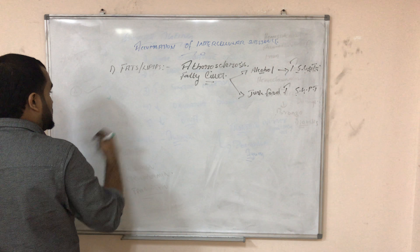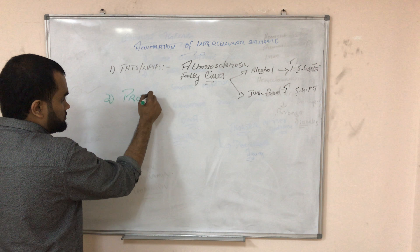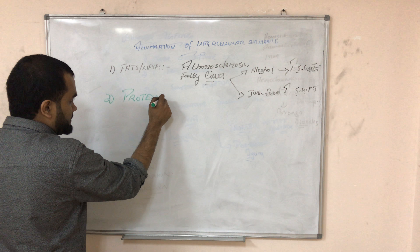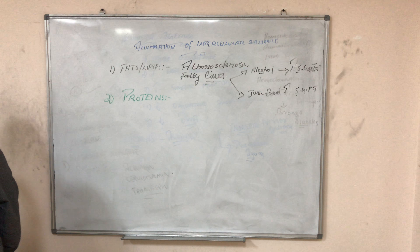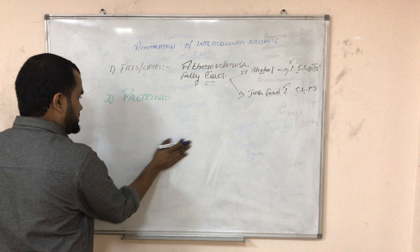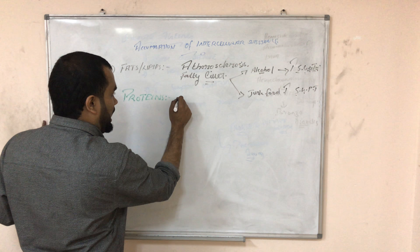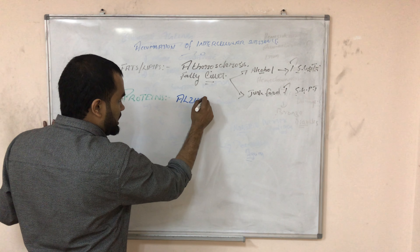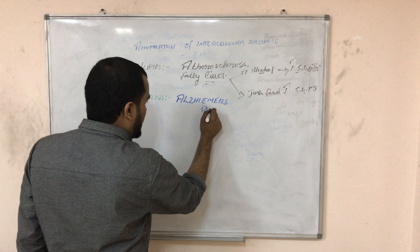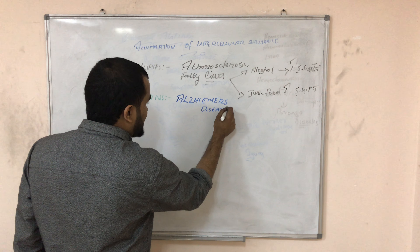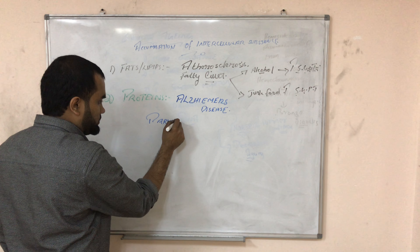Next thing is proteins. Accumulation of proteins can cause many diseases. One of the most famous is Alzheimer's disease, where you will have senile dementia — that is where protein accumulation is happening.